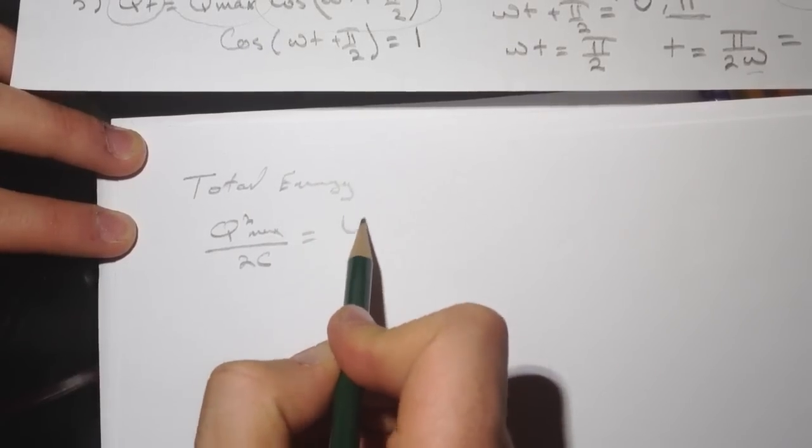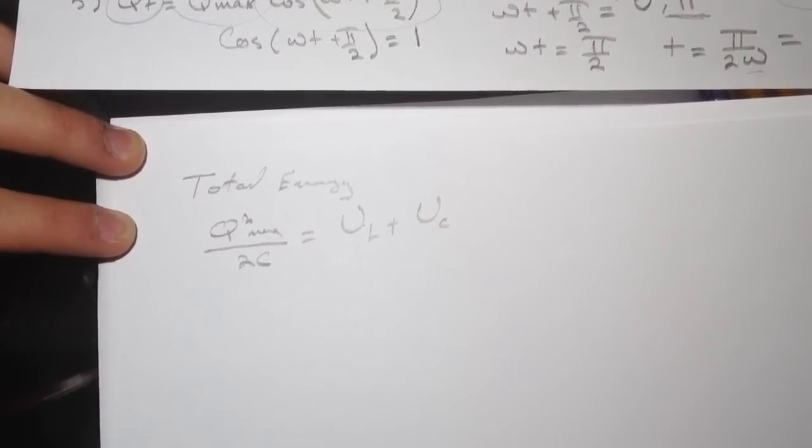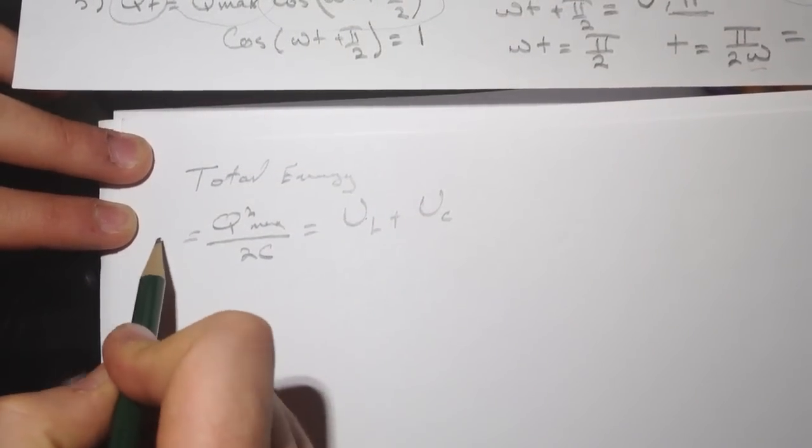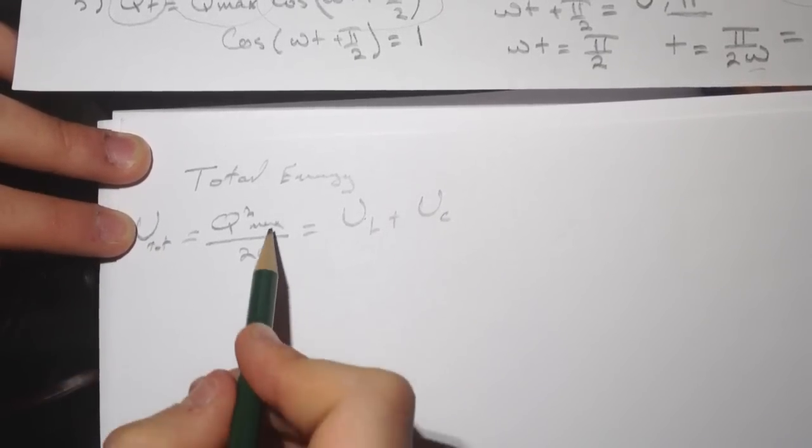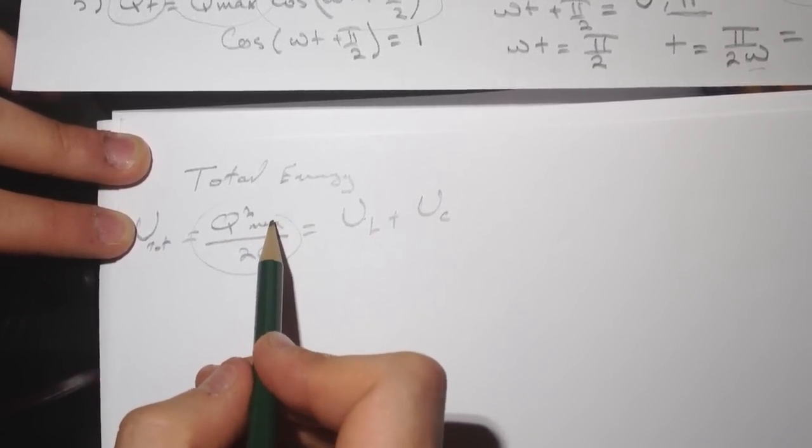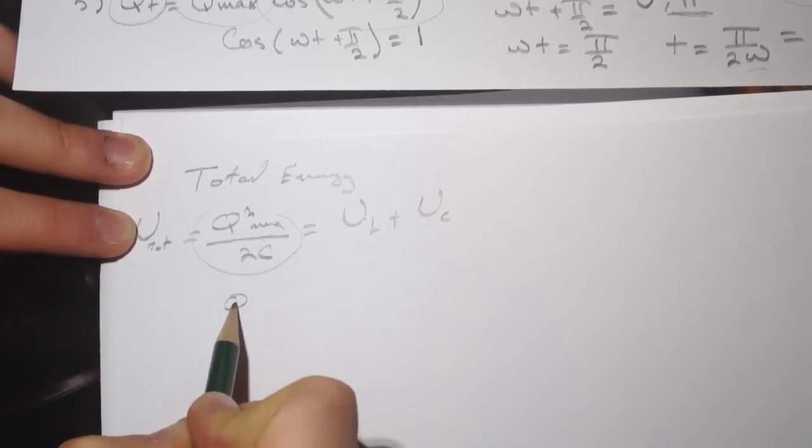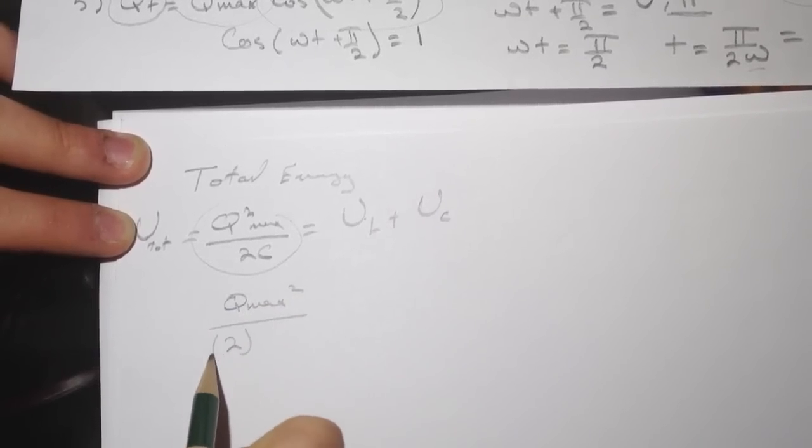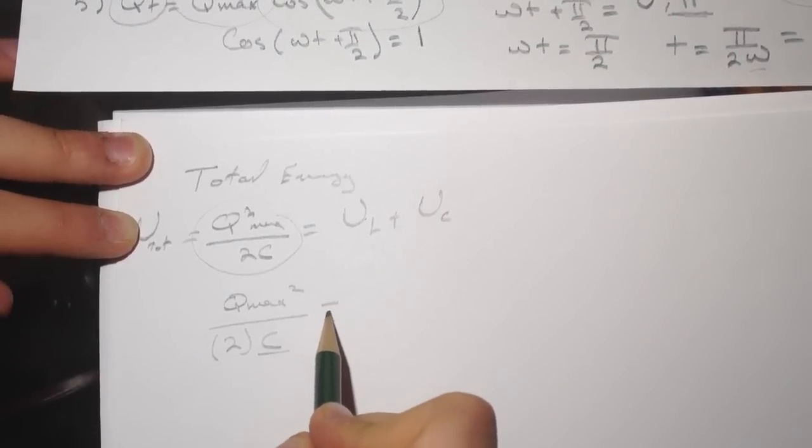This will be equal to U_L plus U_C, the energy at different times here. So this is U_total. We know the Q_max—Q_max we had it from number 3. So Q_max squared, and you have the 2, and you have the C, you know the value of the C, then you'll get your answer.